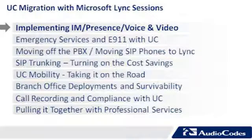The eight steps really start with implementing instant messaging, presence, voice, and video. Then we move to emergency services and E911 with UC. Then we move to getting off the PBX, which talks about migrating the customer from the PBX over to their UC platform. Then we move to SIP trunking and cost savings. Then into mobility. Our sixth session is about branch office deployments and survivability for retail and small branch outlets. Then call recording and compliance, which is big for healthcare, legal, and other applications. Finally, we wrap it up with a session called pulling it together with professional services.